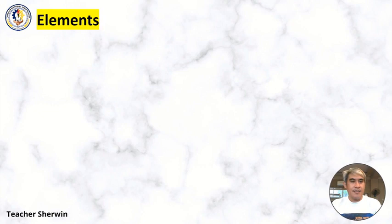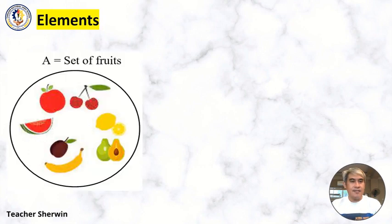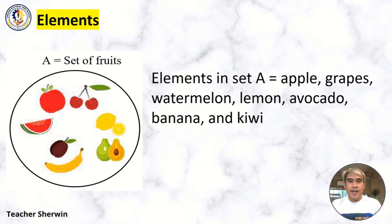Elements. So what is an element? A equals set of fruits. So I mean to say set A is composed of set of fruits. And what are the elements? Elements in set A are apple, grapes, watermelon, lemon, avocado, banana, and kiwi. So those are elements.